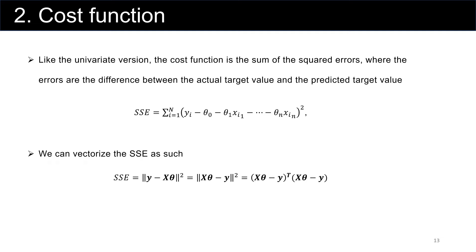We define SSE similar to univariate regression. The cost function is the sum of all squared errors, where the error is the difference between the actual target value and the predicted target value: y sub i minus theta 0 minus theta sub 1 times x i1, and so on, squared. In vector format, this is the squared norm of y minus X theta, or equivalently the squared norm of X theta minus y.